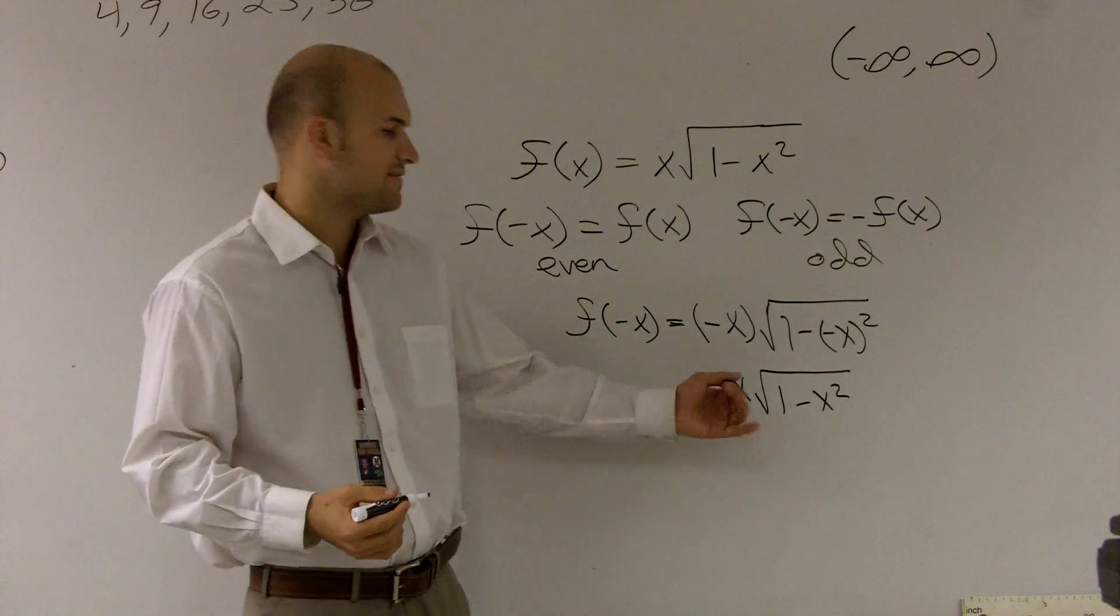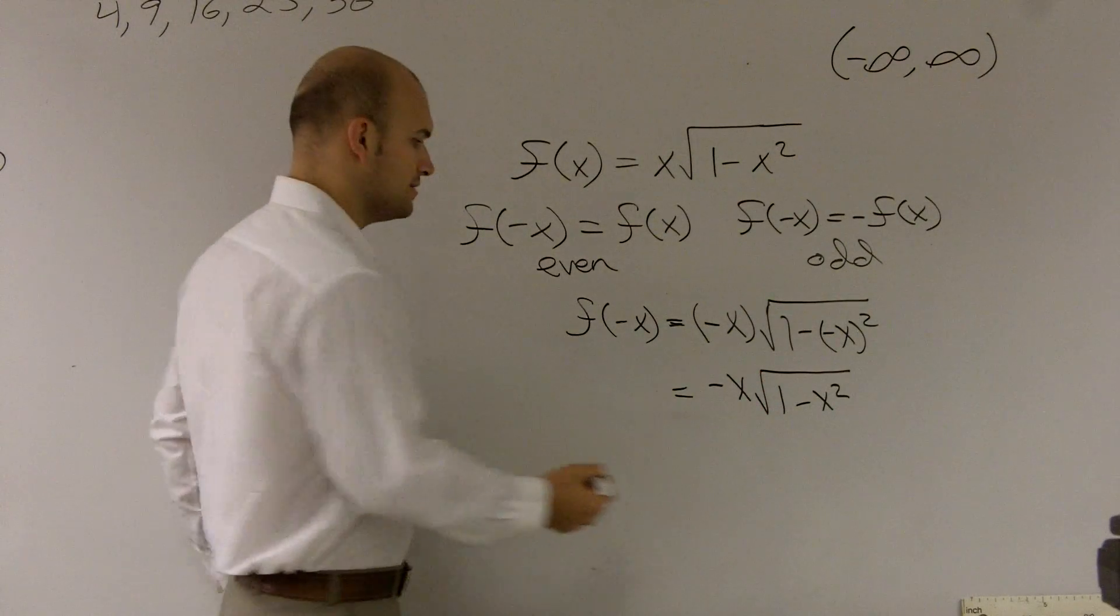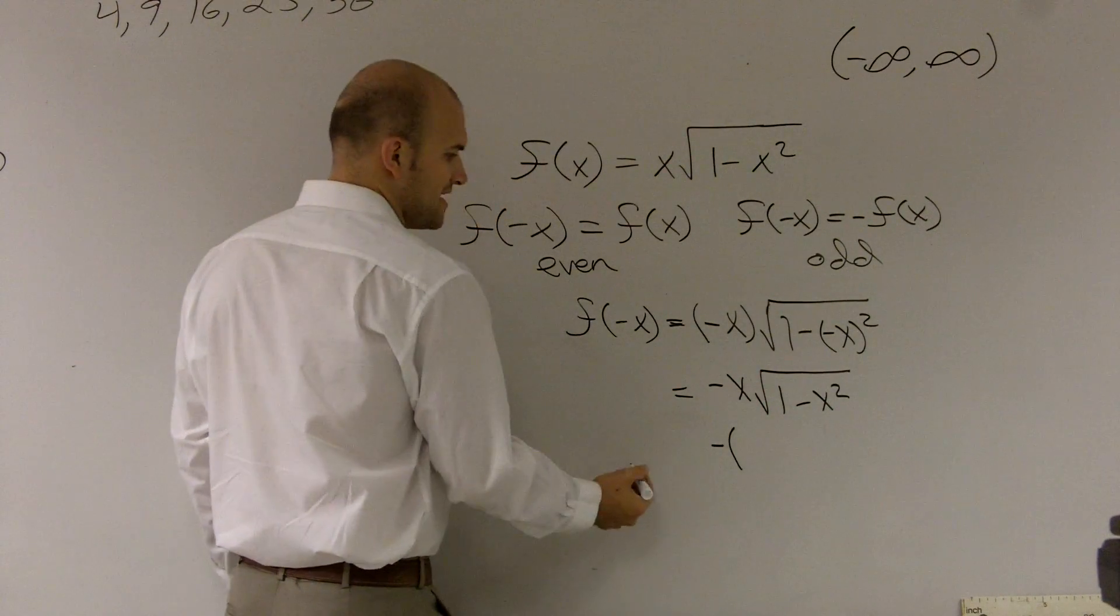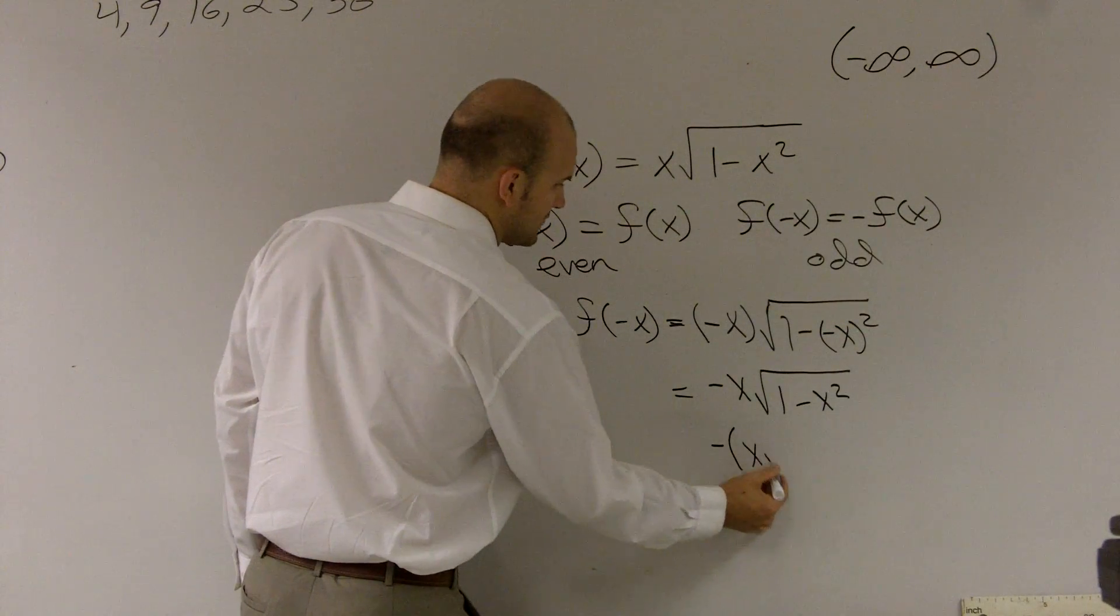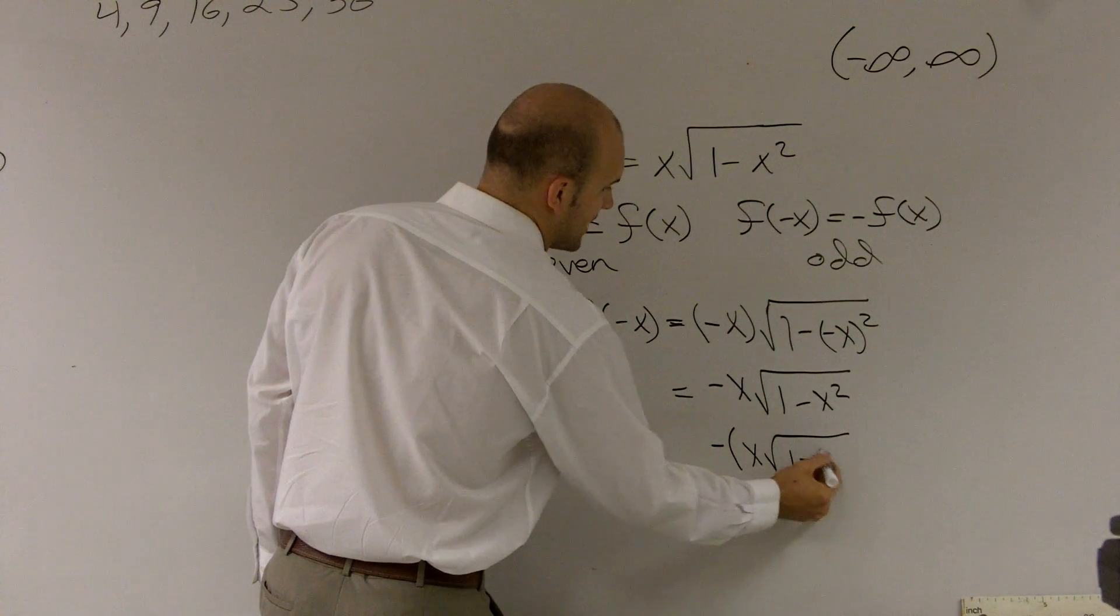Then, now what I can do is if I factor out my negative, I'm still left with x times the square root of 1 minus x squared.